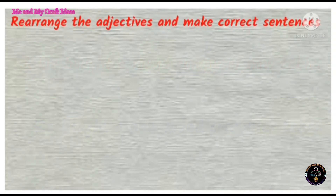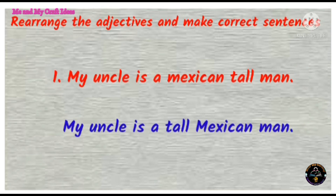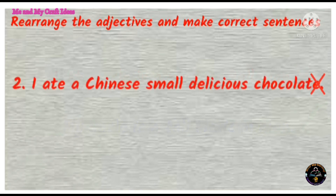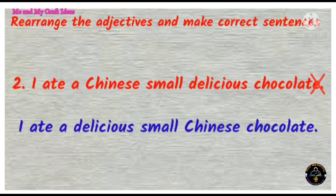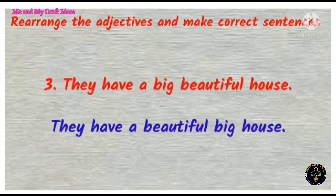Let's do some more sentences — rearrange the adjectives and make correct sentences. My uncle is a Mexican tall man. Correct: my uncle is a tall Mexican man. I ate a Chinese small delicious chocolate. Correct: I ate a delicious small Chinese chocolate. They have a big beautiful house. Correct: they have a beautiful big house.